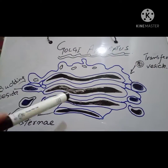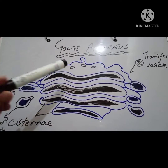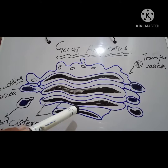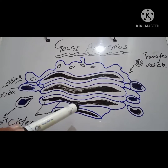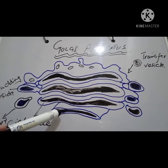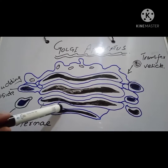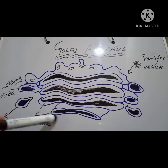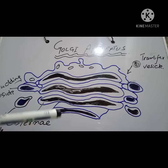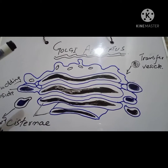These transfer vesicles come from the smooth endoplasmic reticulum. The outer convex face is the forming face, also known as the cis-Golgi, while the inner concave surface is the maturing face, known as the trans-Golgi. The cisternae break up into vesicles from the maturing face, and the whole stack consists of a number of cisternae thought to be moving from the outer to the inner face.